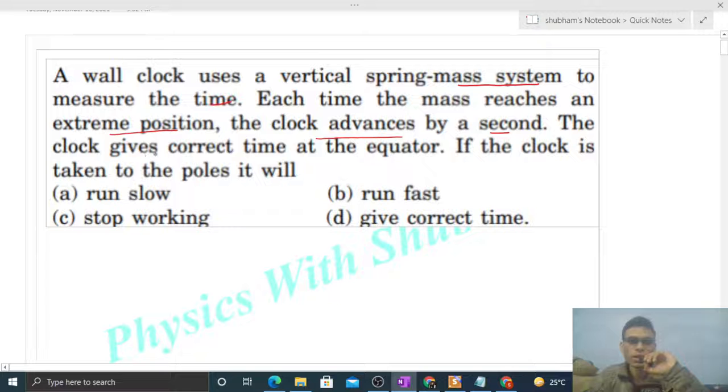The clock gives correct time at the equator. If the clock is taken to the poles, what will happen? The time period of a spring-block system is T = 2π√(m/k), right? This is the time period of oscillation of a spring-block system.